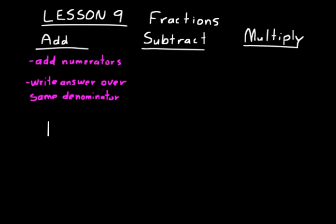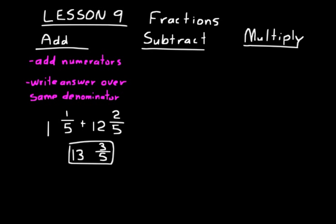As an example, let's say you had these two mixed numbers: one and one-fifth plus twelve and two-fifths. What you do with mixed numbers like that is add the whole number parts first. One and twelve is thirteen. Then the fraction parts — they have common denominators — so add the numerators: one and two is three. Write the answer over the same denominator, five. Thirteen and three-fifths is the answer.